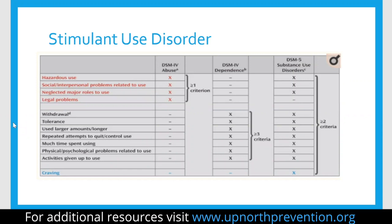Now we define it as a stimulant use disorder, with two or more criteria met. We recognize cravings, and greater than five is severe, four to five is moderate, and two to three is mild. This is the fundamental definition you'll see if somebody develops a stimulant use disorder — mild versus moderate versus severe. That's where all these terms come from, and basically how many criteria they meet determines what their severity is.